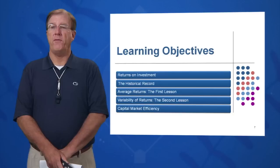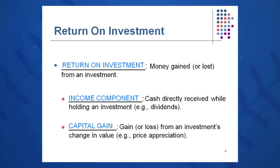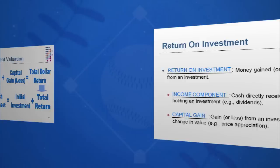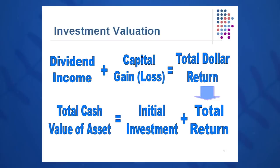First objective: return on investment. Return on investment is money gained or lost from an investment — we might have a positive return or a negative return. In your investing lives you'll see an income component and a capital gain component in many of these investments. When you buy a stock you're looking for price appreciation, which we call the capital gain, and you might also be looking for a dividend. Not all stocks pay dividends, but some do. Total return is equal to dividend income plus capital gain or loss, giving you your total dollar return.